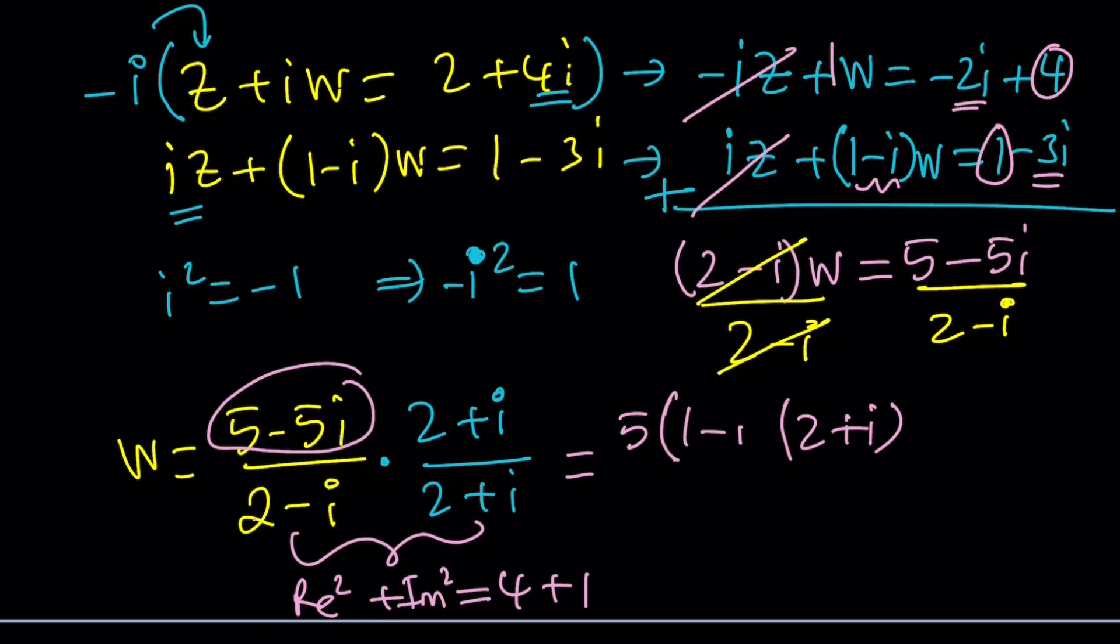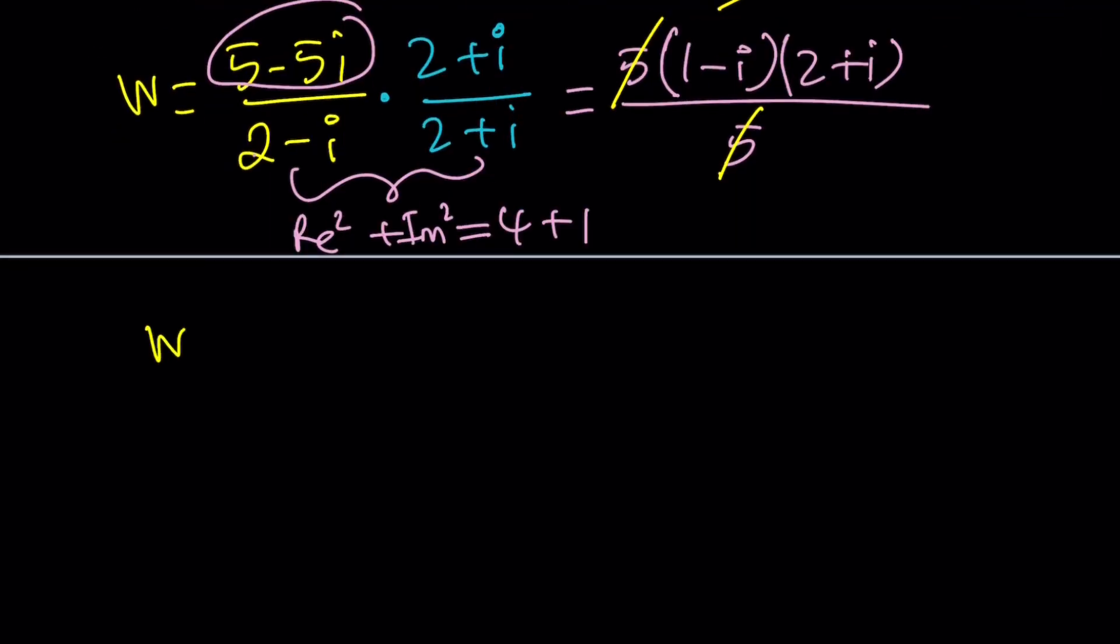So I took out the 5 because I know that 5 is going to cancel out. You could also distribute and then try to factor it. It could be a little bit more work. Doesn't really matter. So this is what we end up with. That's going to give us W after we distribute.